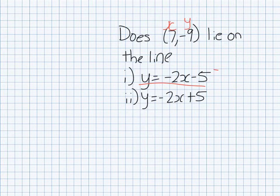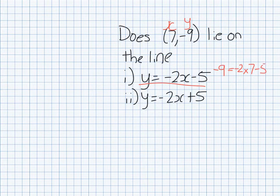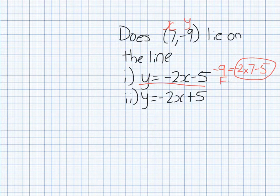So if I substitute y for minus 9 and x for 7, I get minus 9 equals minus 2 times 7 minus 5. Now, if you put that on your calculator, that's not a true statement. Minus 9 does not equal minus 2 times 7 minus 5. This part equals minus 19. So because the statement is false, the answer is, does the point lie on the line? No.